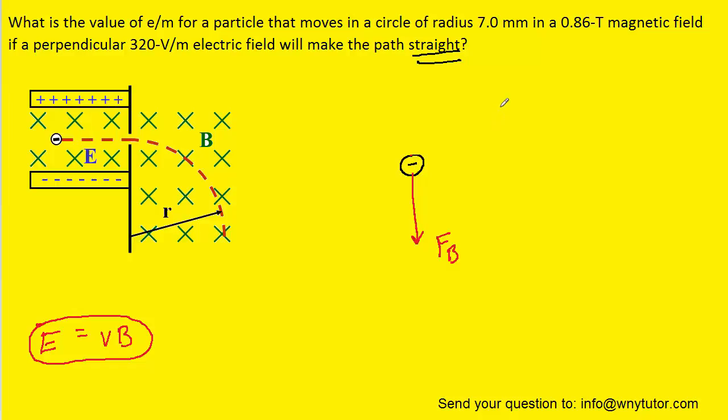Because it's traveling in a circle, we know that the net force has to equal the mass times the centripetal acceleration. Now we're using centripetal acceleration because it's moving in a circle. Centripetal acceleration is equal to the speed squared divided by the radius of its circular path.